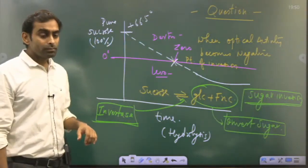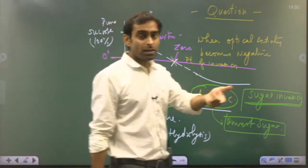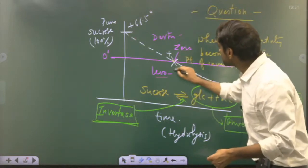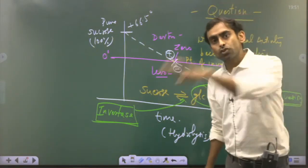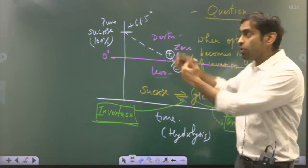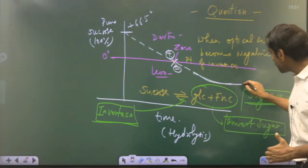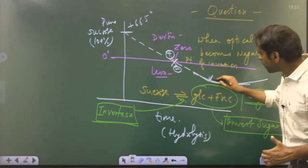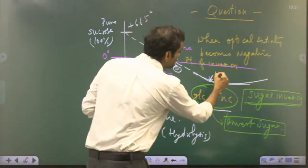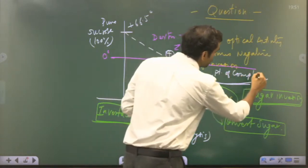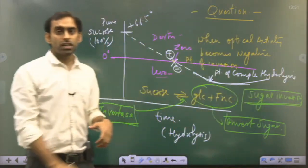Now an important question: at the point of inversion, when optical activity is zero (transitioning from positive to negative), what percentage of sucrose has been hydrolyzed? This does not mean all sucrose is gone — it just means the optical rotation has crossed zero. Let's set up the equation. Let the percentage of sucrose hydrolyzed = x. Then the fraction of sucrose remaining is (100 - x)/100, glucose formed = x/100, and fructose formed = x/100.